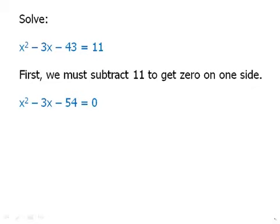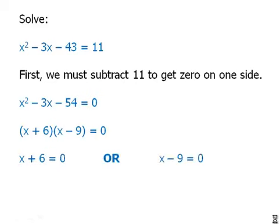So if we have a positive six and a negative nine, those will add to negative three. Those are the numbers we need. Then we apply the zero product property, set each one of those equal to zero and solve. Again, notice that I'm being very careful to write the word or at each step. The word or is not decoration. The word or is a valid piece of mathematical equipment here.